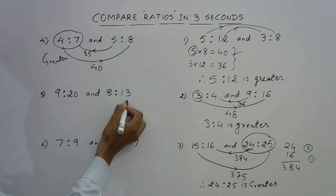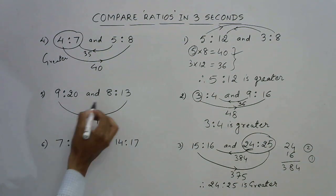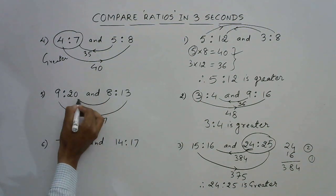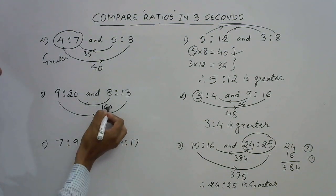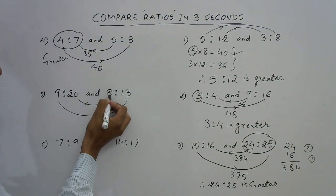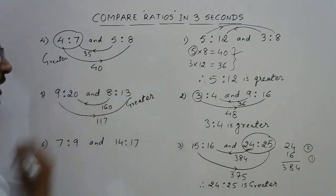Here, 13 and 9: 13 into 9 is 117, and 8 into 20 is 160. So this product is greater, and this is obtained by multiplying the first term of the first ratio, therefore 8 ratio 13 is greater.